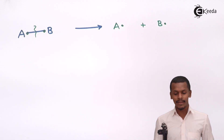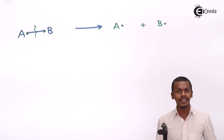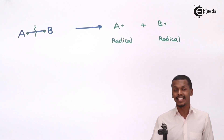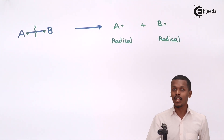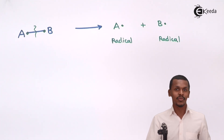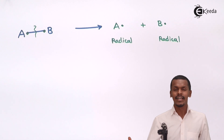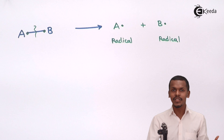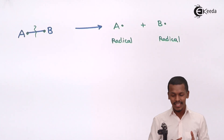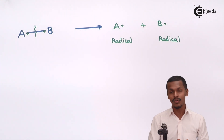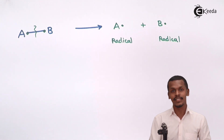The products obtained are called radicals. Radicals are highly reactive species — they are neither carbocations nor carbanions. These radical species are very short-lived, but they play a very important role in product formation. For example, if reactant AB produces radicals, and another reactant CD is also involved, the radicals react with each other to give the final product.